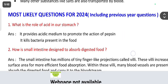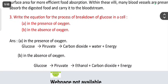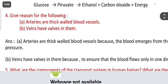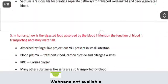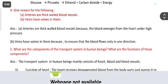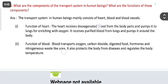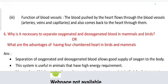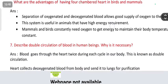Most likely questions for 2024 include: what is the role of acid in our stomach? How is the small intestine designed to absorb digested food? Write the equation for the breakdown of glucose in a cell in the presence and absence of oxygen. Give reason for the following: arteries have thick walls; veins have valves in them. What are the components of the transport system in human beings and what are their functions? Why is it necessary to separate oxygenated and deoxygenated blood in mammals and birds? What are the advantages of having a four-chambered heart?